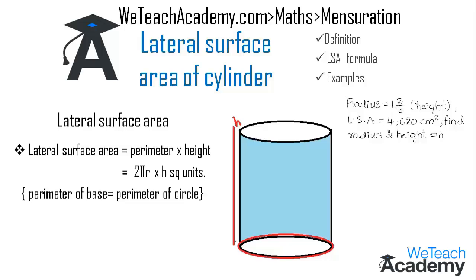We are given that the lateral surface area equals 4620 cm². We also know the formula to find the lateral surface area is 2πrh. Substituting the values of r and h into the formula, we get 2 × (22/7) × (5h/3) × h.